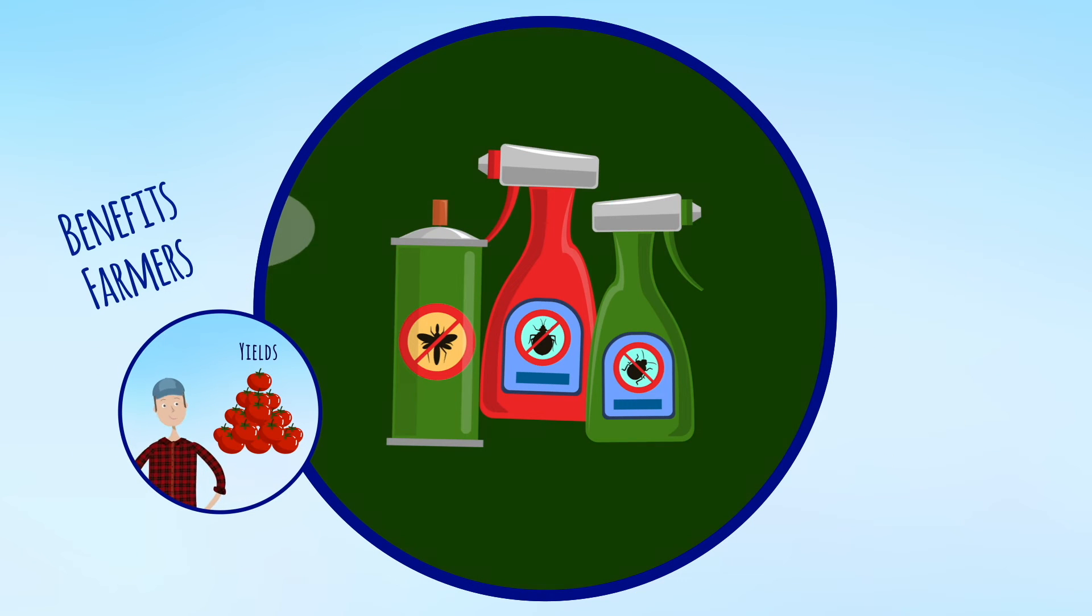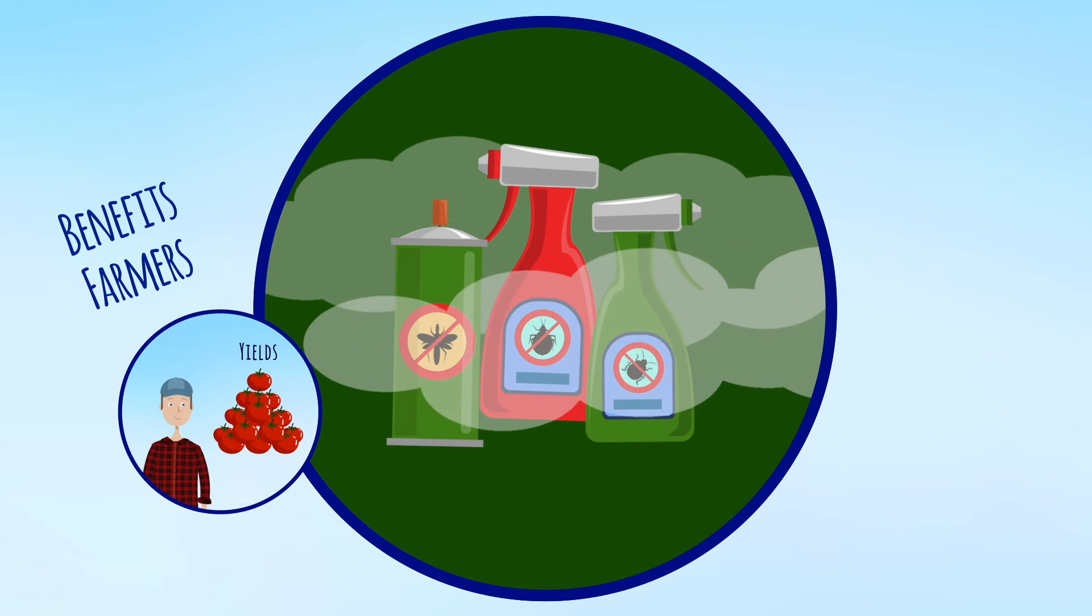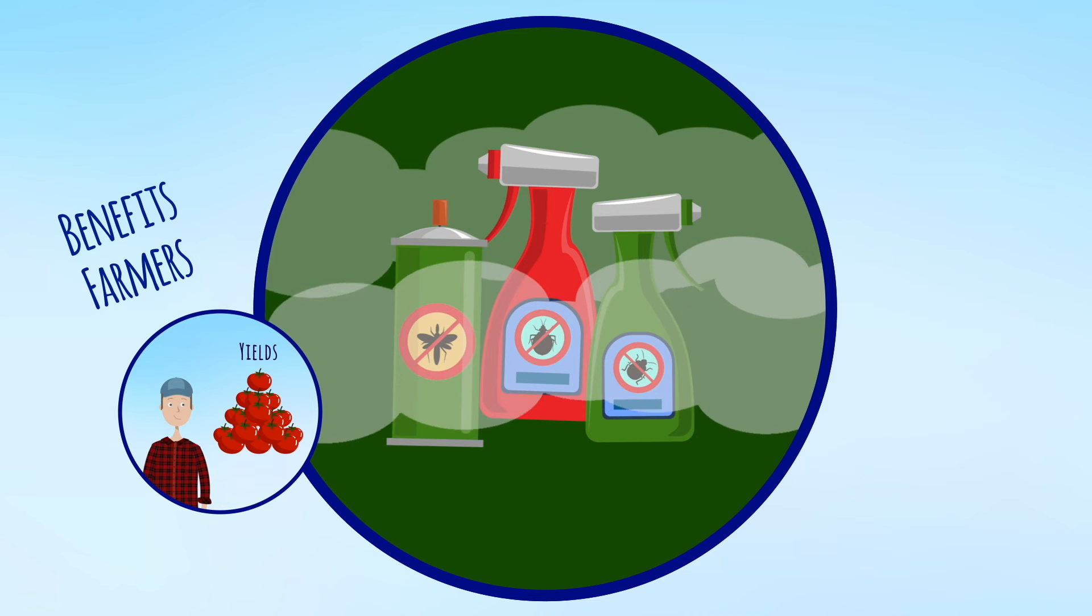According to the UN, pesticides are largely to blame for the decimation of insect populations by approximately 25 percent per decade over the last 30 years. Bird populations are also crashing as a consequence.